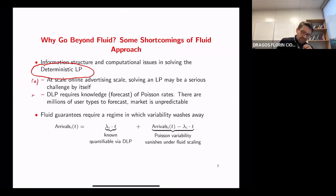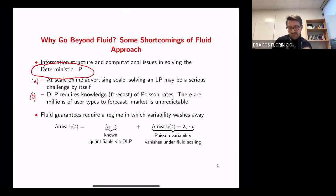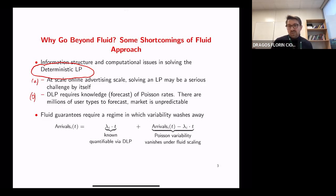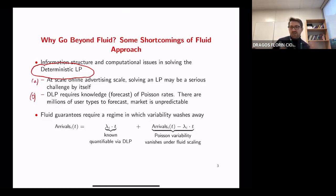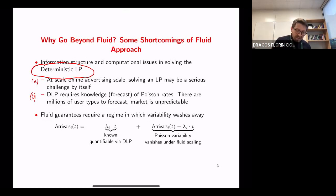Issue B is that even being able to write down that deterministic LP requires knowing the rates of all the different user arrival processes, which you may not have access to as a decision maker. Solving the deterministic LP requires forecasting something that is very high dimensional and generally very unpredictable in online advertising markets — correlated to all sorts of news shocks or unexpected events.